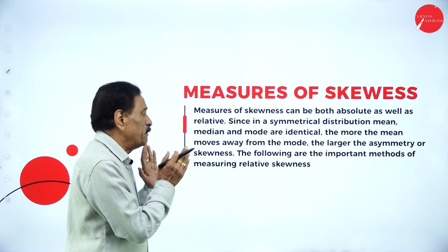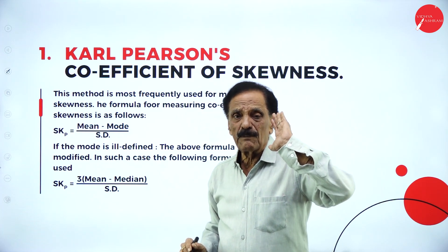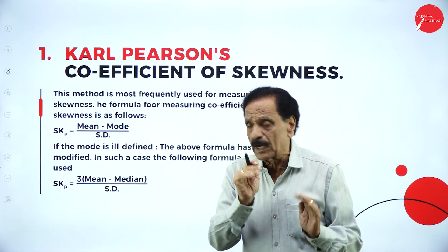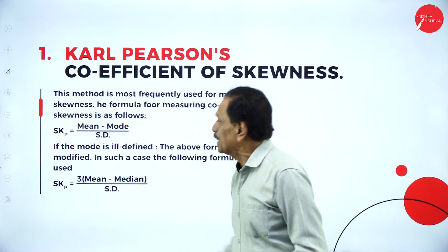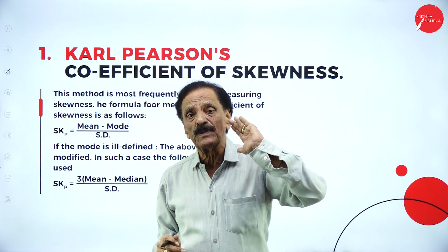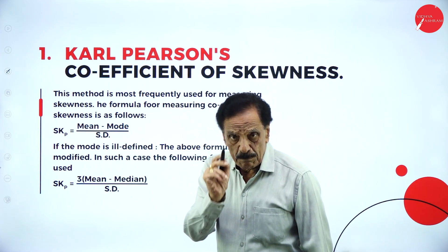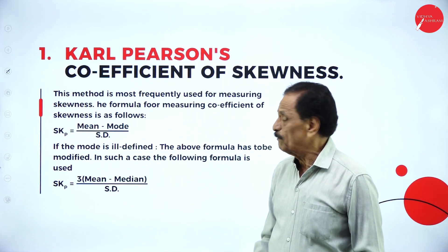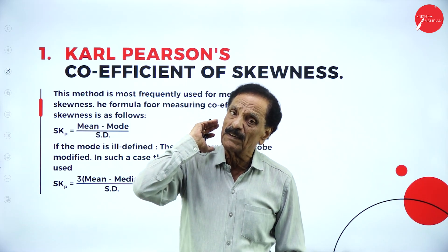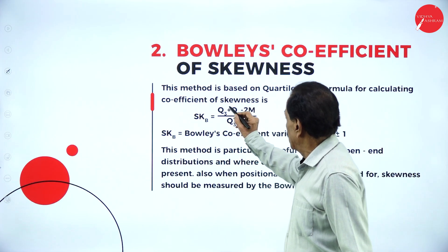The following are the important methods for measuring skewness. Which methods are we going to adopt? We will move on to the formulas. Karl Pearson's coefficient of skewness - in the examination, they will mention the name. This can be asked for 10 marks, sometimes for 15 marks, so you must know which method to adopt. Karl Pearson's skewness formula: mean minus mode over standard deviation. If the mode is ill-defined - mode lies in the highest frequency - if the highest frequency repeats, then the formula is 3 into mean minus median over standard deviation.